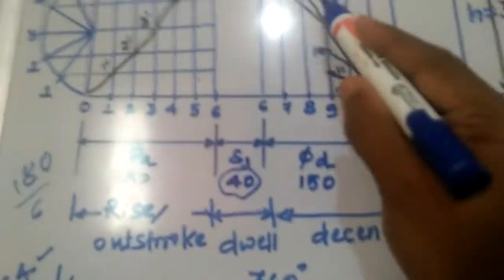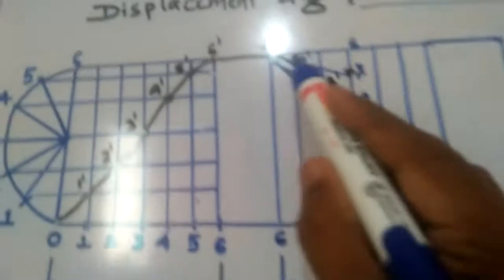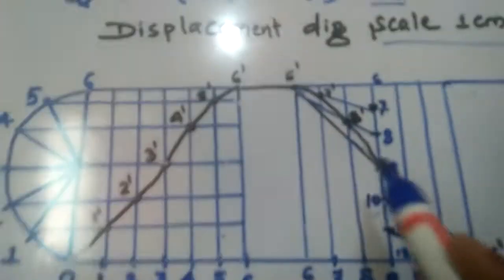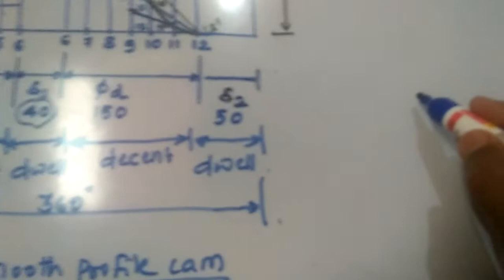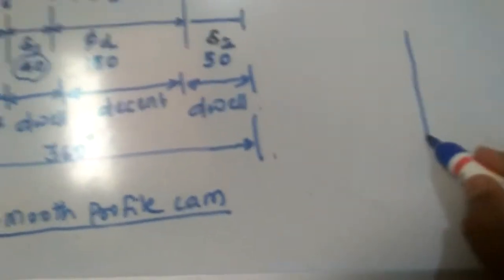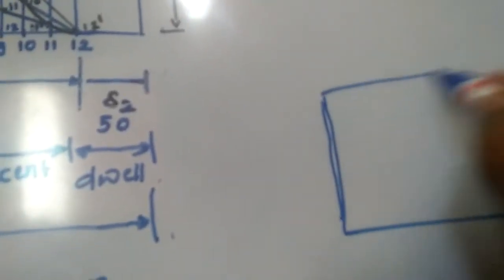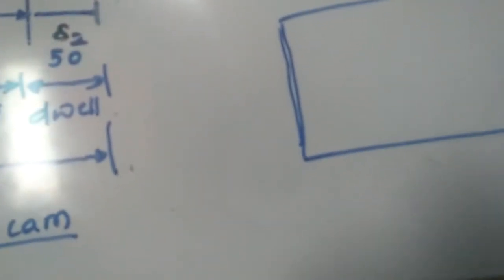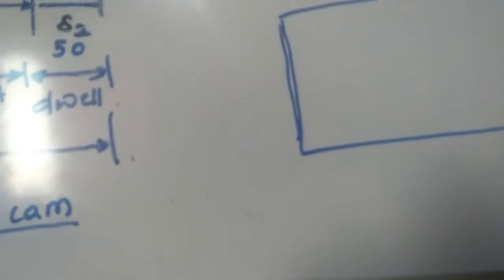For the return, they say it is constant acceleration and deceleration. The vertical axis represents the lift height of the follower, and the horizontal axis is the cam rotation. Here is how to draw it separately: this is the vertical height — that is the lift of the follower — and this is the horizontal cam rotation.